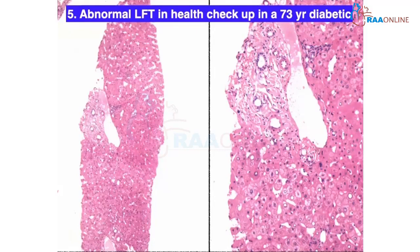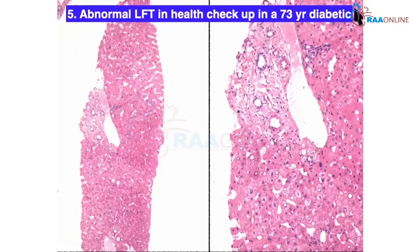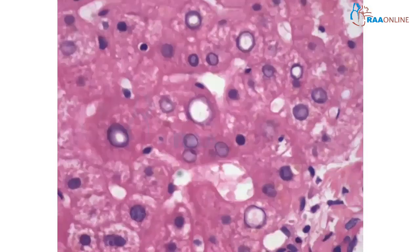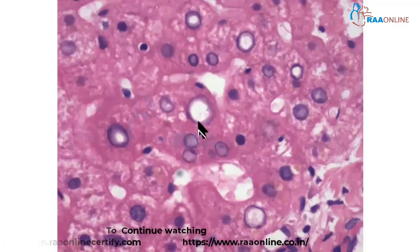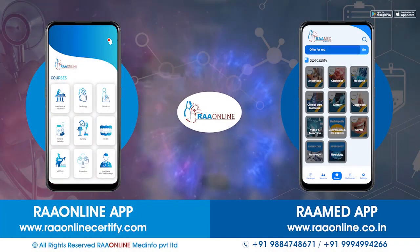Case 5: Abnormal liver function tests found on health checkup in a 73-year-old diabetic. What do you think? Looking at the high-power field, you can see intranuclear inclusions — visible even at low power. Whenever you see intranuclear inclusions, you have to think of diabetic hepatopathy and Wilson's disease. The architecture is maintained, but the key finding is the intranuclear inclusion.